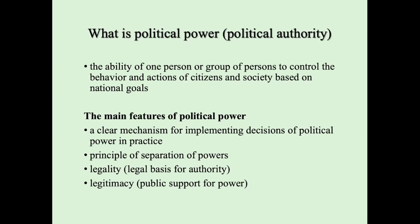What is political power, or political authority? Political power is the ability of one person or group of persons to control the behavior and actions of citizens and society based on national goals. The main features of political power are: a clear mechanism for implementing decisions of political power in practice; the principle of separation of powers — for example, according to the Belarusian constitution there are three branches: legislative, executive, and judicial; legality, meaning the legal basis of authority; and legitimacy, meaning public support for power.